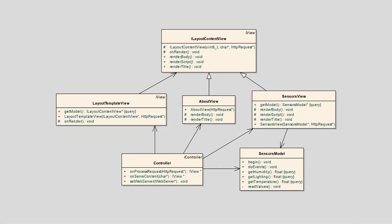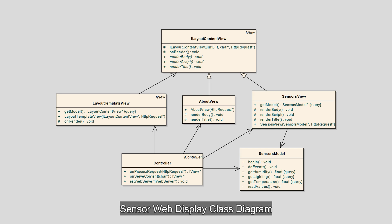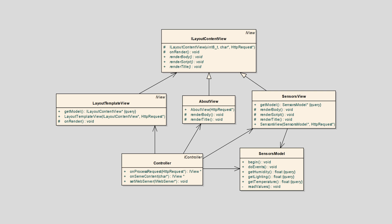Looking at the class diagram, we can see the relationship between the model, view, and controller classes. The sensors model has the responsibility for reading the sensor values. The sensors view depends on the model and renders the values as HTML. The layout view classes implement a master web page that has navigation links. The controller filters the HTTP request and serves an appropriate view, and client scripts in the sensors view refresh the display.